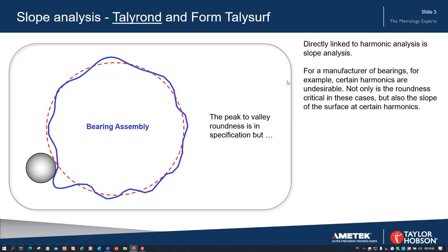For a manufacturer of bearings, certain harmonics are undesirable. Not only is the roundness critical in these cases, but also the slope of the surface at certain harmonics. As the size or amplitude of the harmonics increase, this increases the slope of the surface, and as the frequency of the harmonics increase this also increases the slope of the surface. So slope analysis is directly linked to harmonic analysis.